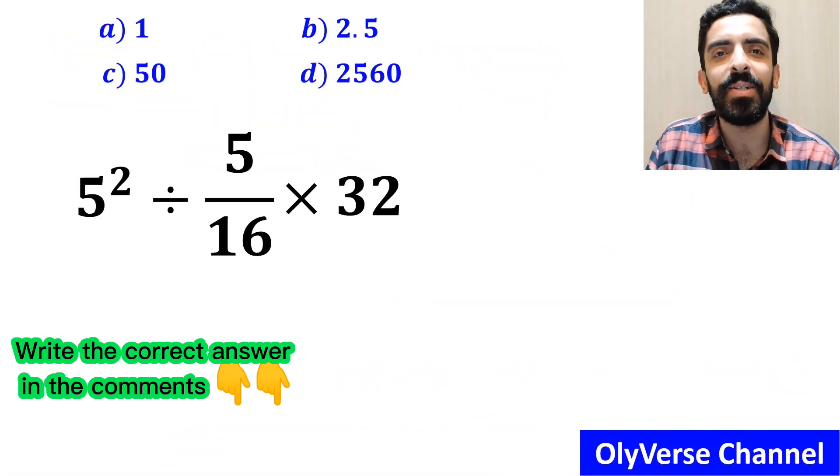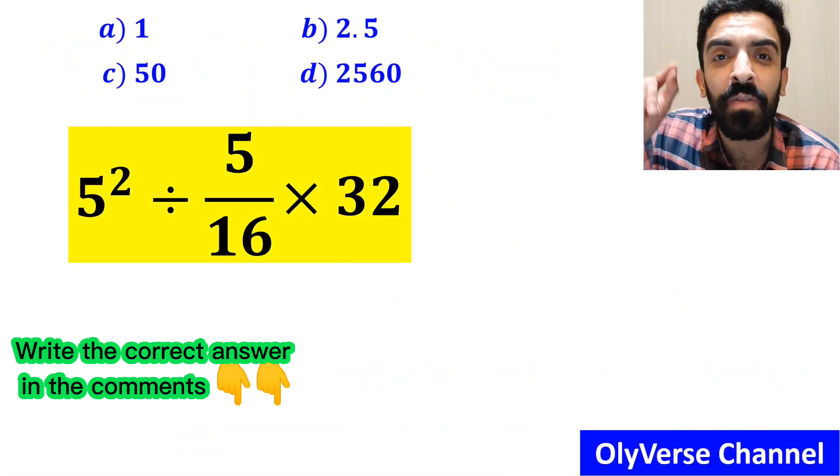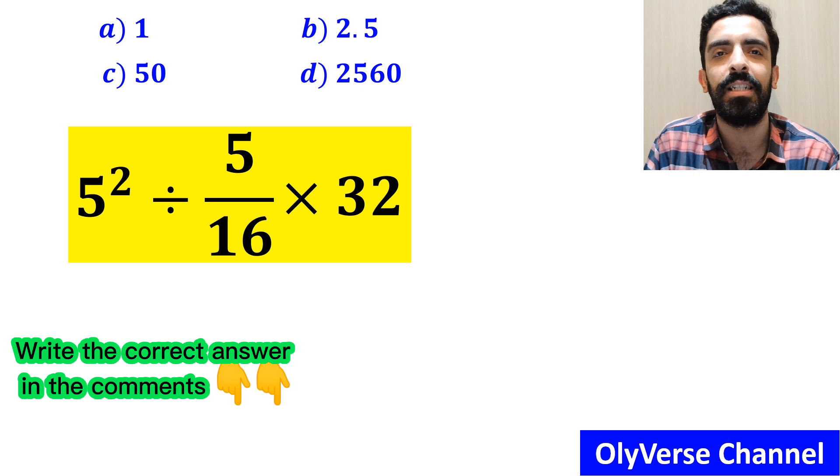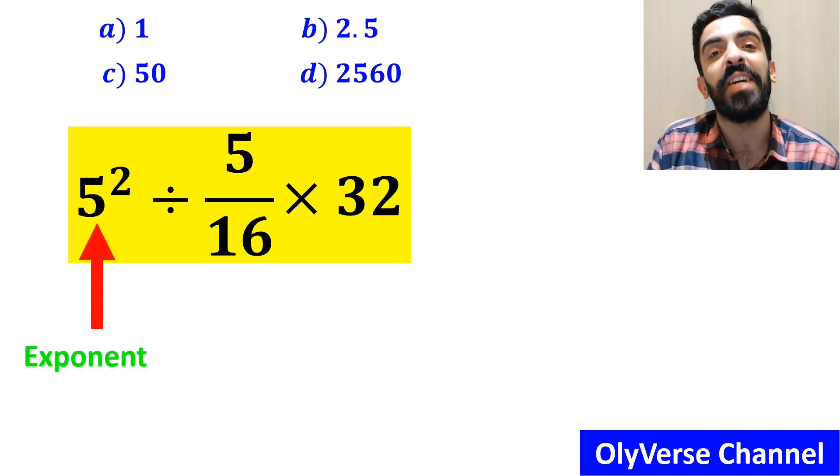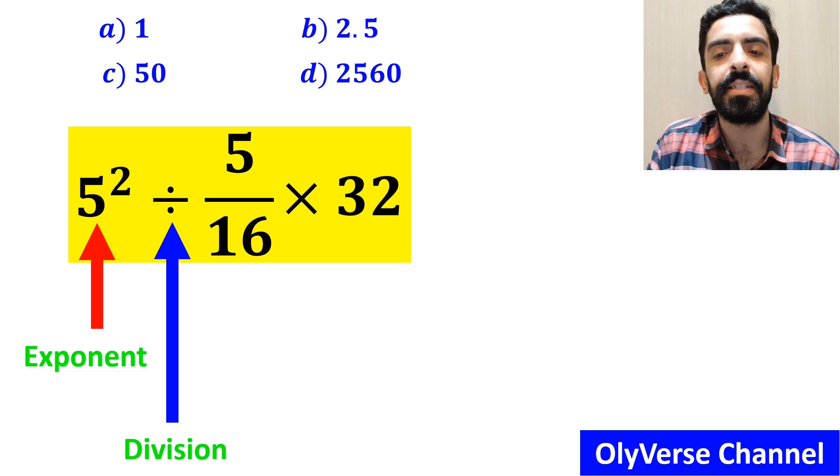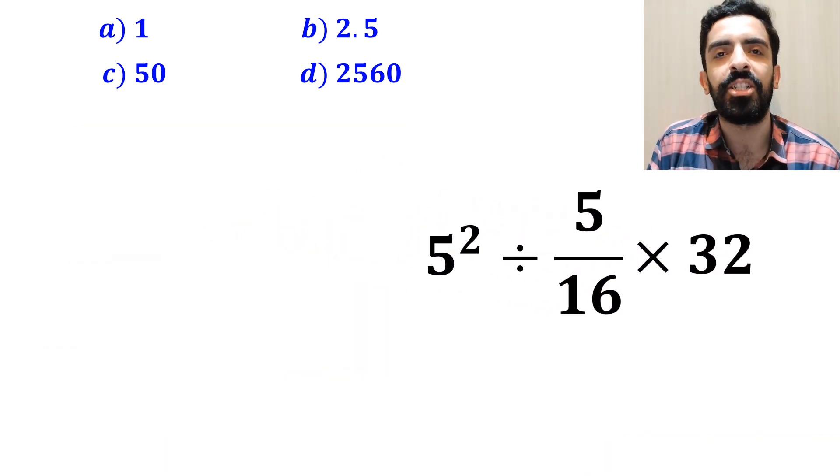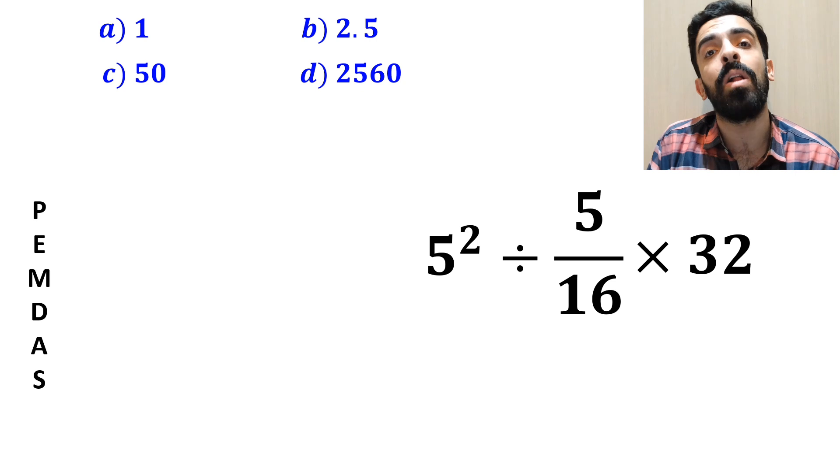Now let's go step by step together to show you how to solve this expression properly. As you can see on the screen, in this expression, first we have an exponent, then a division sign, and finally a multiplication. To solve this question, we must follow a rule that is called PEMDAS.